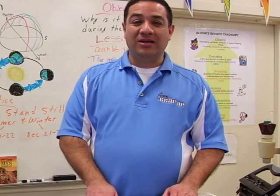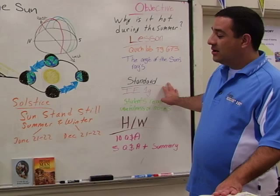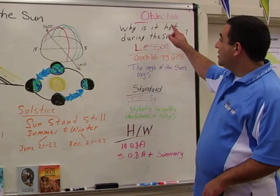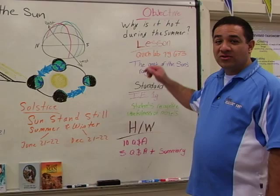The California Standard is Investigation and Experimentation 1G. Students will recognize the usefulness and limitations of models. The objective question we're going to try and answer is: why is it hot during the summer?